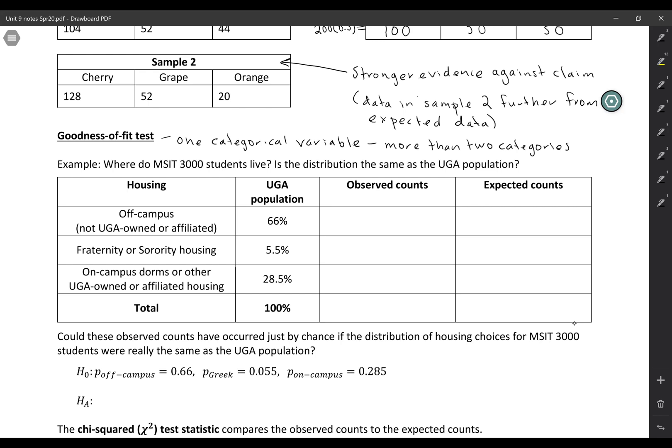Okay, so I have data here for the UGA population. This is information that I found online. And this is going to be my null hypothesis. So my null hypothesis would be that MSIT students are actually the same as the UGA population. They have the same breakdown of housing options.